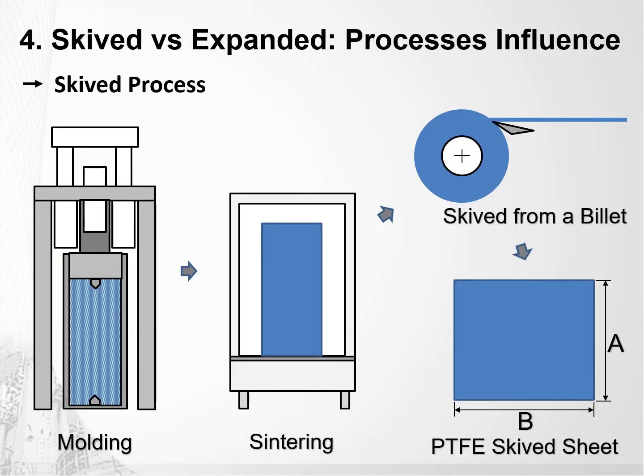Now that we have talked about the tests we're going to perform, let's talk about the materials that we're going to test. Starting with the skived PTFE, hard PTFE, or sometimes called virgin PTFE. You add the PTFE resin in a mold and press it to form a billet. The material is done through a molding process. Since you're not laminating or stretching in any direction, you do not get any molecular alignment through this manufacturing method. Once you have your molded billet, it goes into a sintering oven. The sintered material is then machined or carved to the desired sheet thickness.